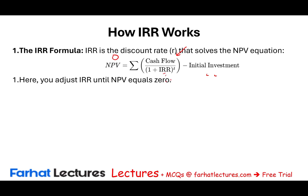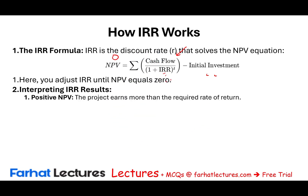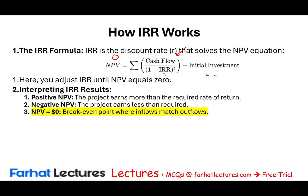You could use different rates through trial and error, but you don't have to do that — you would use a financial calculator or an Excel spreadsheet. A positive NPV means the project earns more than the required rate of return. A negative NPV means it earns less. NPV equal to zero is the break-even point where inflows match outflows — this is the IRR.